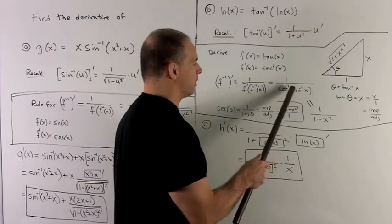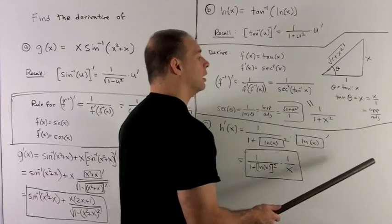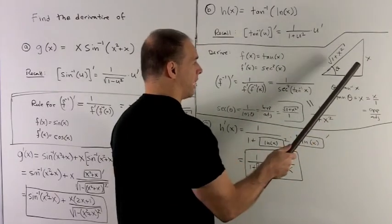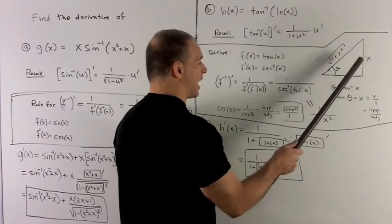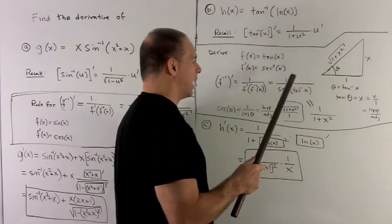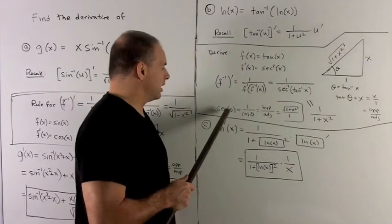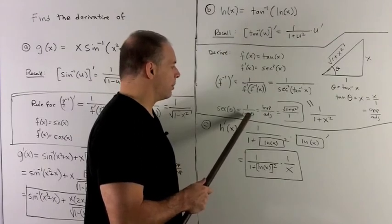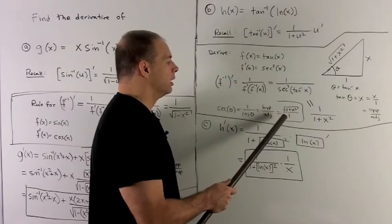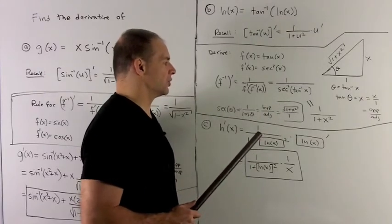We use the language trick — call theta equal to tan inverse of x, which is the same as tan theta equal to x, written as x over 1 for the right triangle. Tangent is opposite over adjacent, so x goes in the opposite and 1 is the adjacent. Squaring both and adding gives a hypotenuse of radical 1 plus x squared. Secant is 1 over cosine, which flips to hypotenuse over adjacent, giving radical 1 plus x squared over 1. Squaring the secant, the radical disappears and we get 1 over 1 plus x squared — that's the formula for the derivative of inverse tangent.